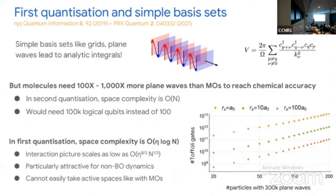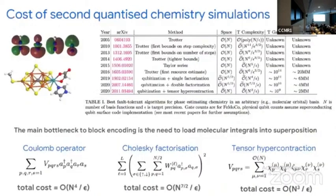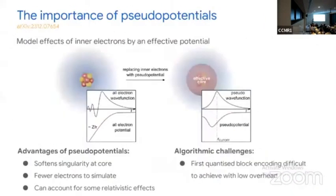The eta is the number of electrons. We're generally trying to reduce the scaling with eta as well, but it's typically going to be much smaller than N.